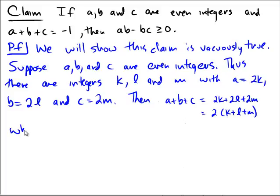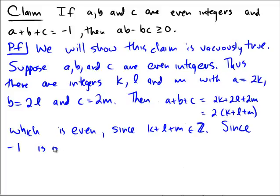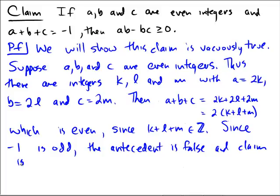However, since negative 1 is odd, the antecedent is false, and the claim is vacuously true. So because we were able to establish that the antecedent of this if-then statement was just categorically false, that means overall the statement is true. And that completes a vacuous proof.